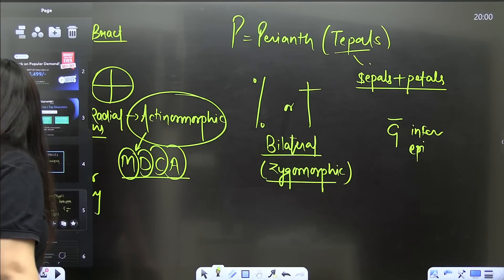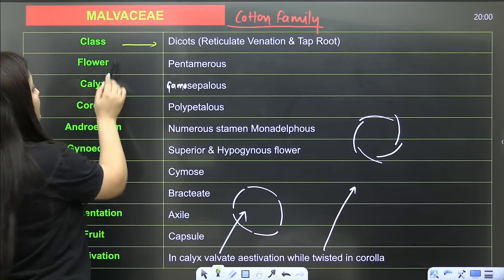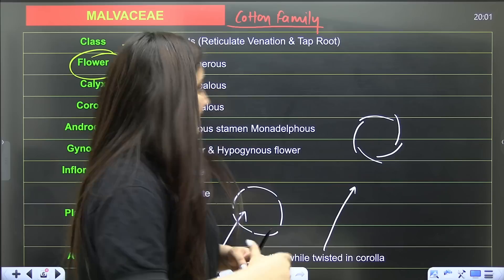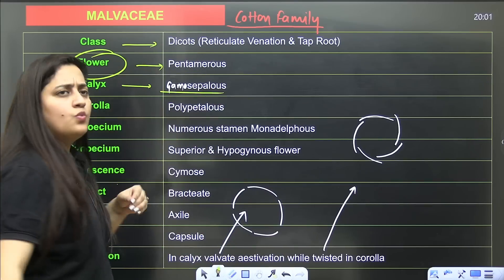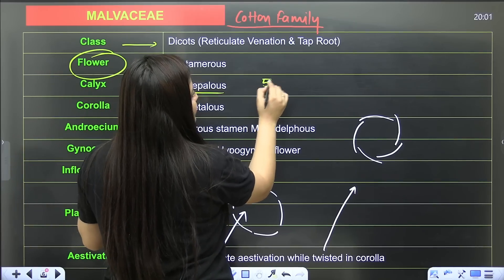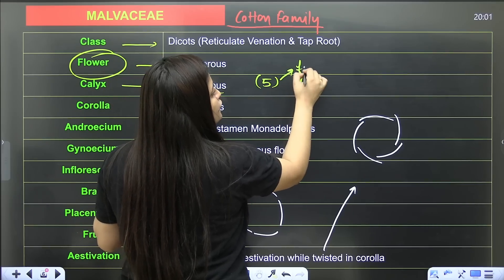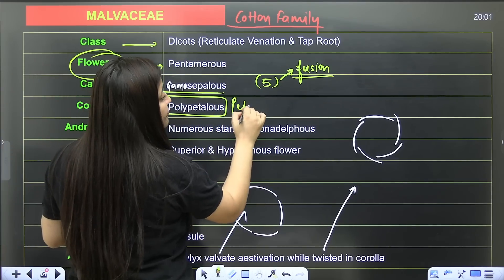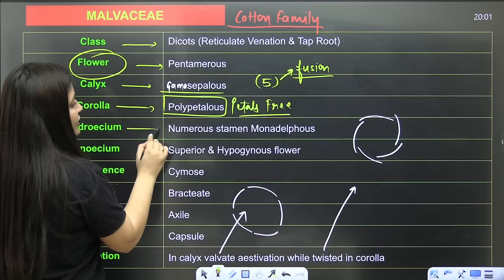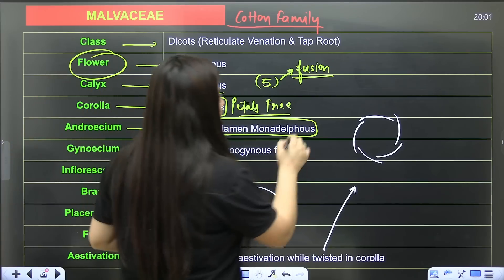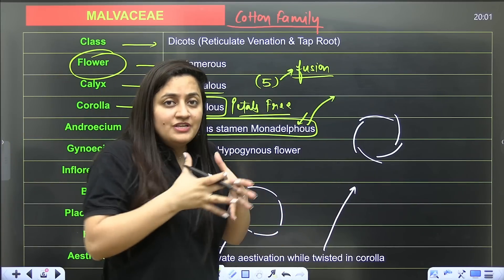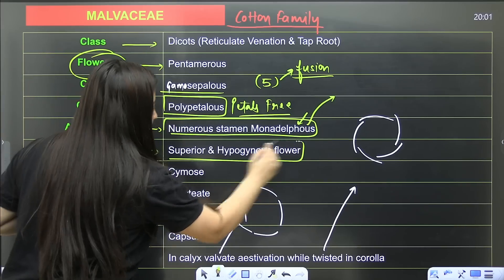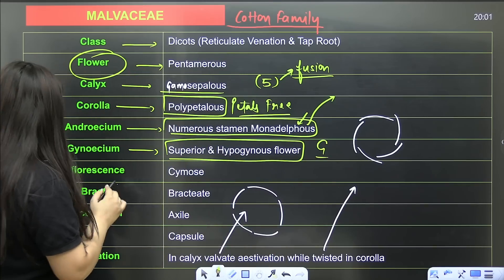Now back to Malvaceae features: class is dicot. The flower is pentamerous — five petals, five sepals. Calyx is gamosepalous, meaning the five sepals are fused — shown by brackets indicating fusion. Corolla is polypetalous, meaning petals are free, not fused. Androecium has numerous stamens and is monadelphous — all stamens form one bundle. Gynoecium is superior and hypogynous. Inflorescence is cymose.